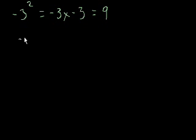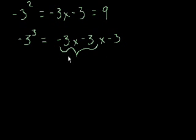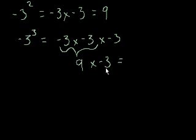Let's figure out what negative 3 to the third power is. Well, once again, we could just write it out. It's negative 3 times negative 3 times negative 3. Negative 3 times negative 3 we already figured out is 9, and we have to multiply that times negative 3. Now we have 9 times negative 3 — they're opposite signs.